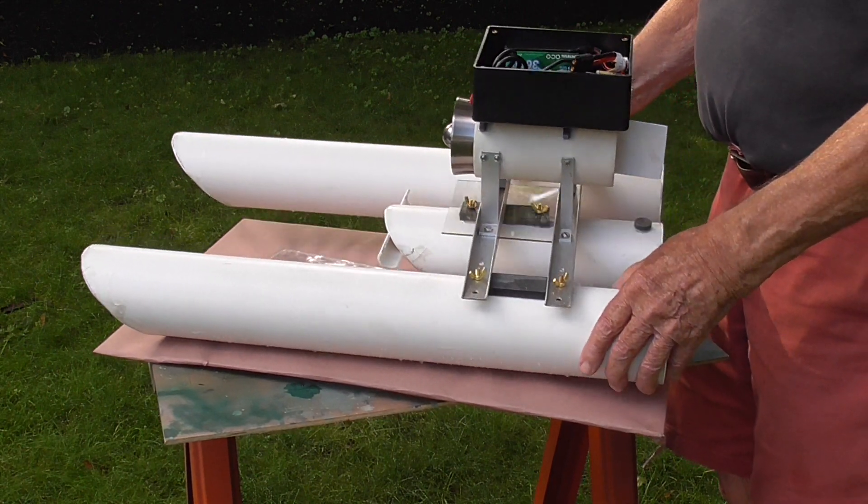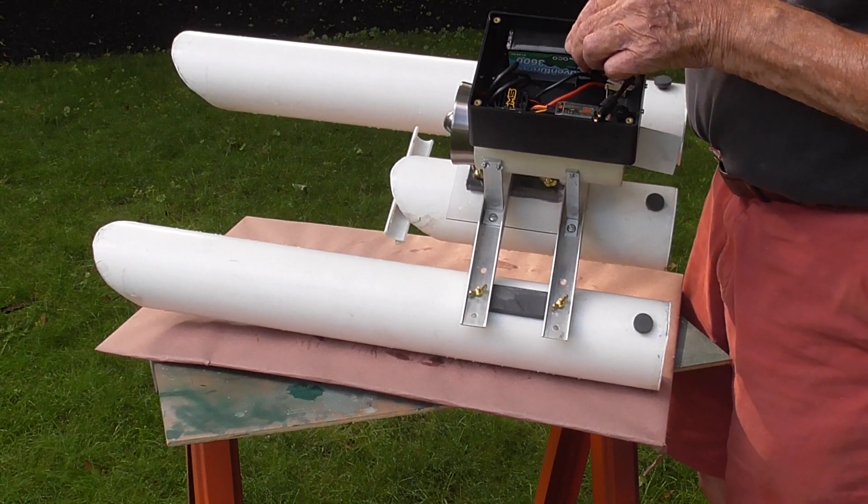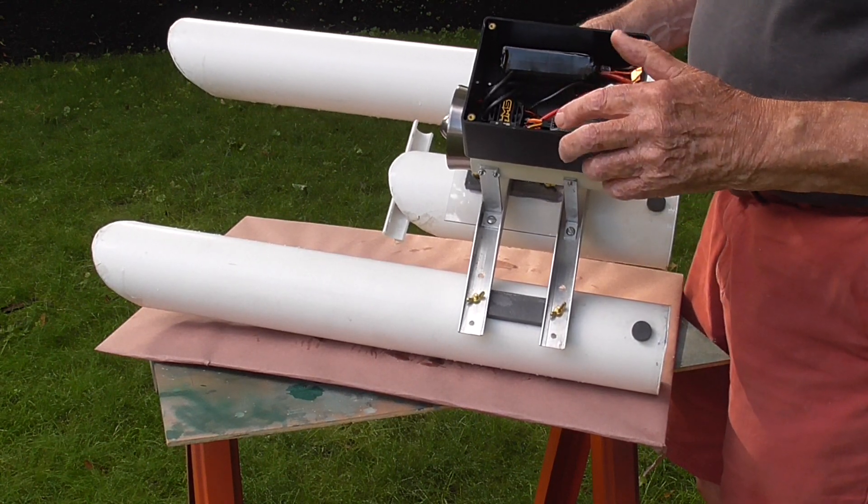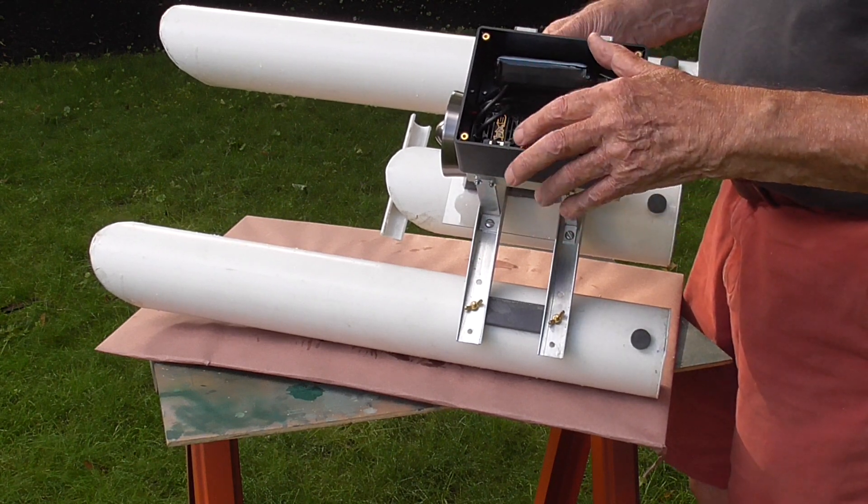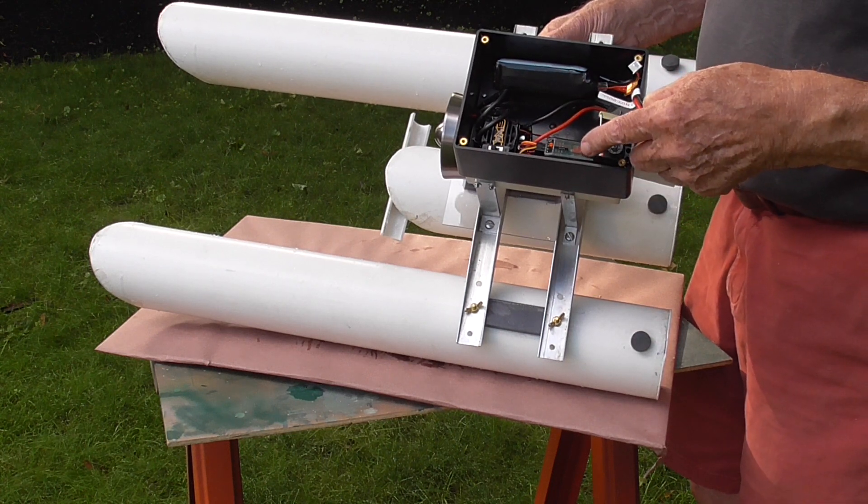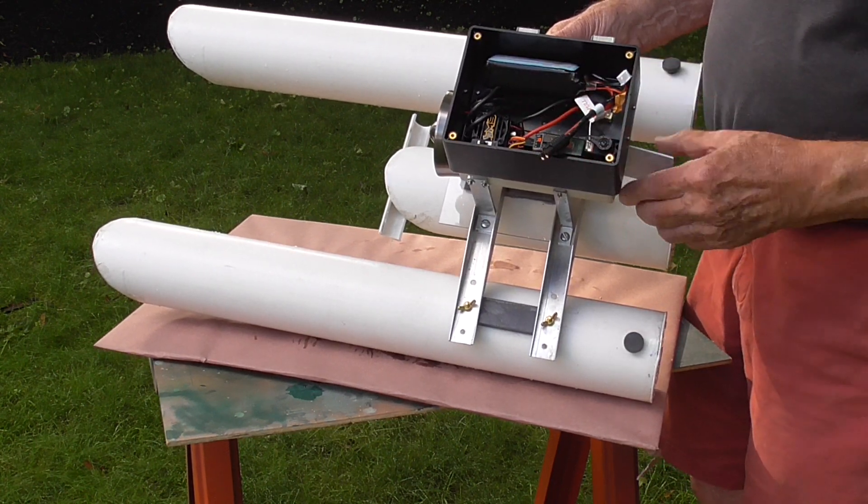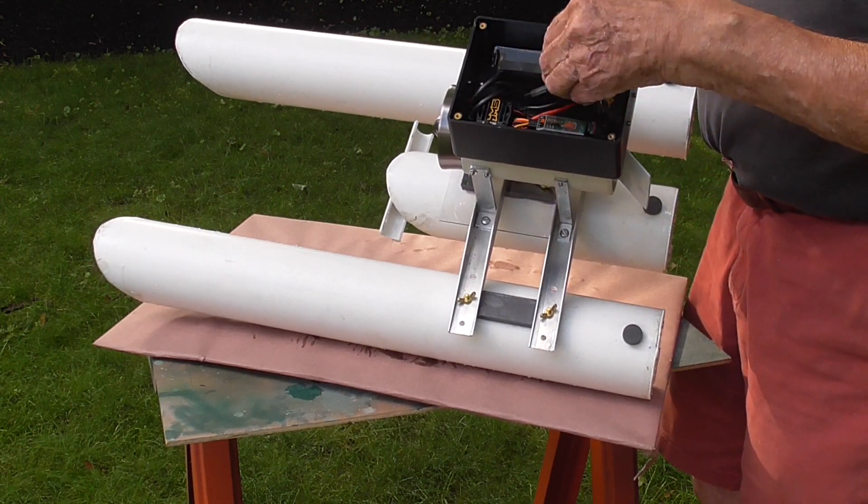If I turn it now, you'll see that I have a battery here. I have a Castle Creations ESC, which is particularly useful because it will go in forward or reverse. There is the receiver, and then obviously there is the rudder for the directional control.